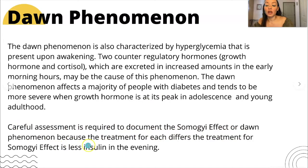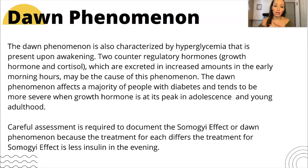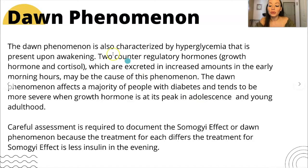The treatment for the Somogyi effect is less insulin in the evening — big point. The Dawn phenomenon is also called the Dawn effect, and it describes abnormal early morning blood glucose, usually between 2 and 8 in the morning, in people with diabetes. Some researchers believe that natural overnight release of counter-regulatory hormones — including growth hormone, cortisol, glucagon, and epinephrine — increases insulin resistance, causing blood sugar to rise. High blood glucose may also be caused by insufficient insulin the night before, insufficient anti-diabetic medication dosages, or carb snack consumption before bedtime.